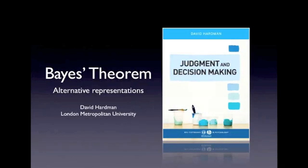Hello, this is David Hartman from London Metropolitan University. In a previous presentation, I talked about Bayes' theorem, showing how the basic calculation works. Bayes' theorem is used to help us update our beliefs about things when we receive new information. In this presentation, I'm going to look at some alternative ways of representing those Bayesian calculations.